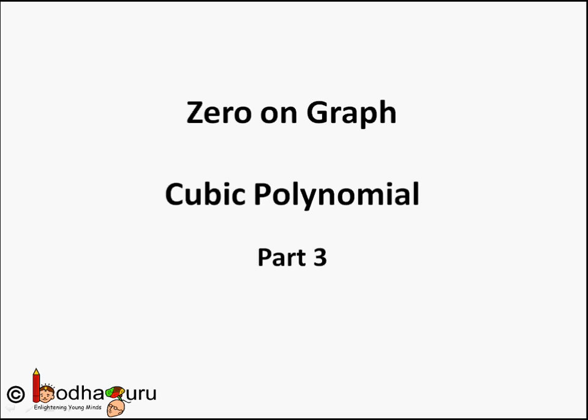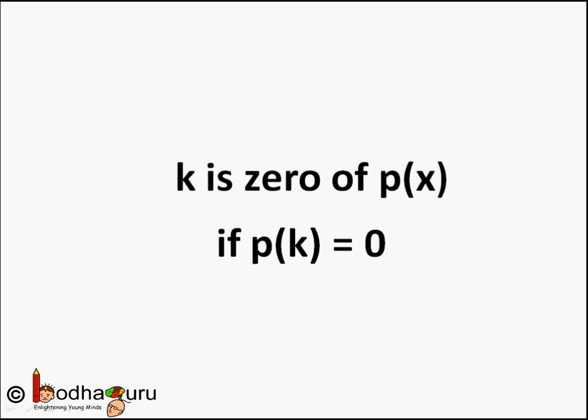Hello friends, as we have seen in our earlier videos that a real number k is zero of a polynomial p(x) if the value of that polynomial is 0 for x equal to k, that is p(k) is equal to 0.